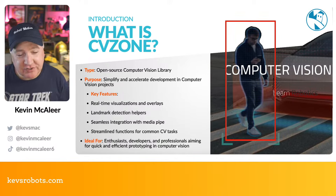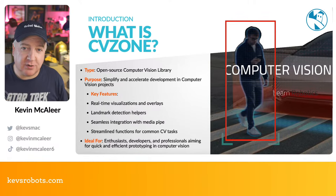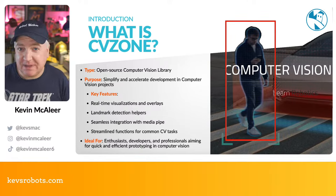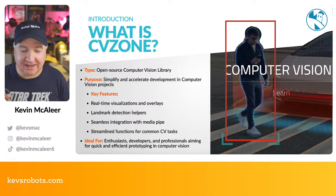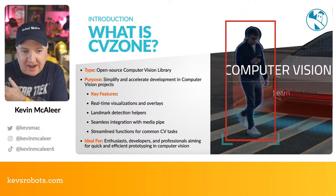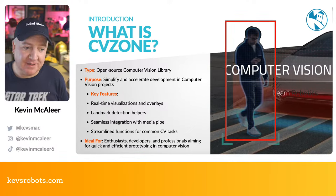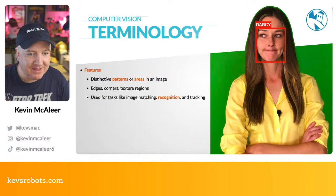CVZone has some really cool features that make computer vision really simple. It has real-time visualization and overlays - the little boxes you can draw around detected objects come free with the software. There's landmark detection, which we'll look at shortly, and it seamlessly integrates with MediaPipe, which is Google's technology for image processing. It provides streamlined functions for common tasks like counting fingers or calculating arm angles - ideal for enthusiasts and professionals aiming for quick prototyping.